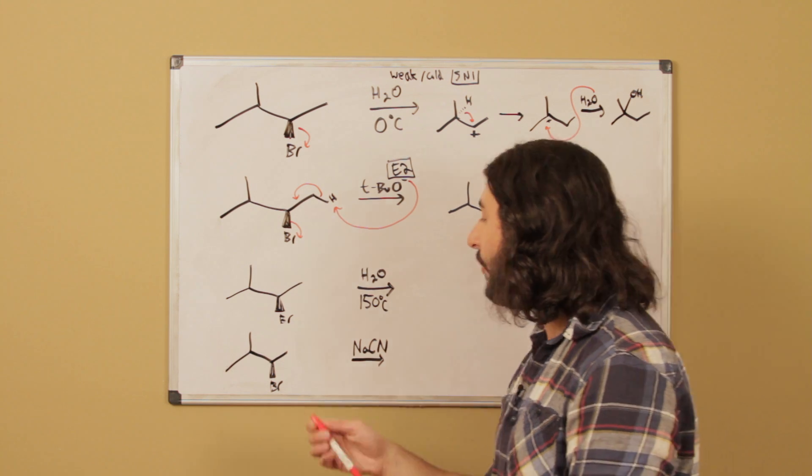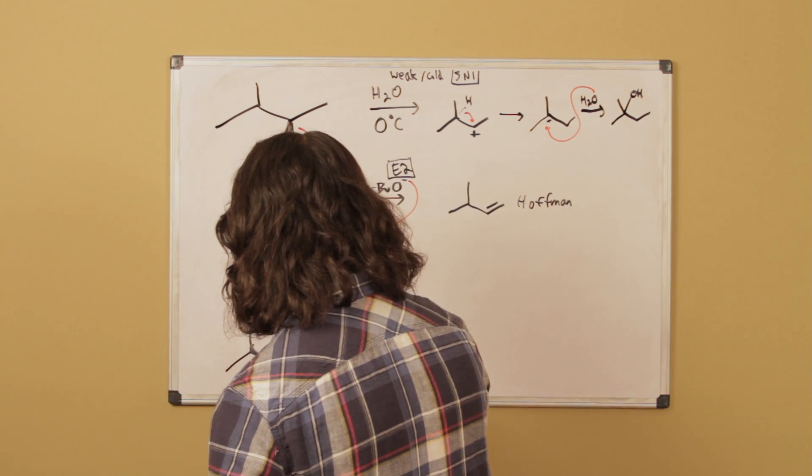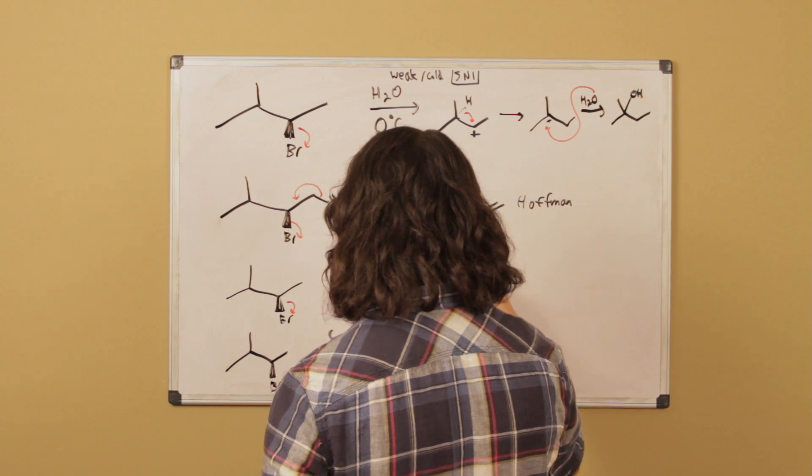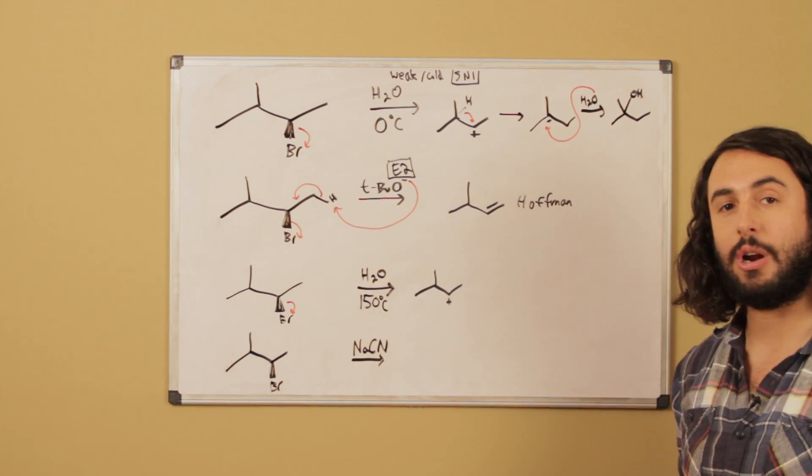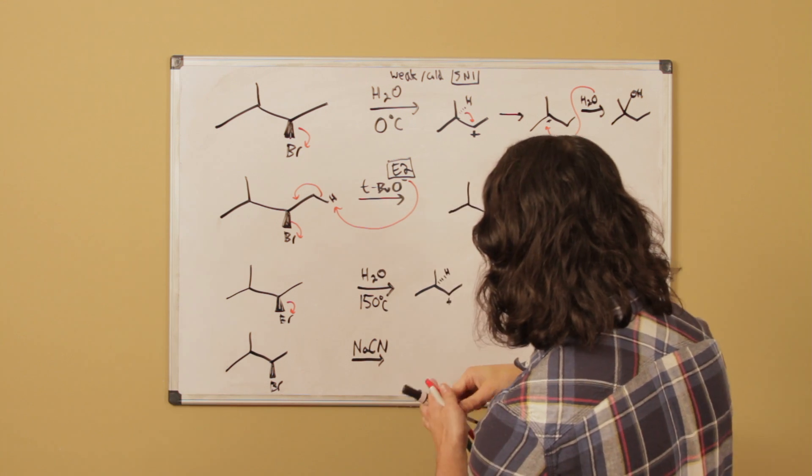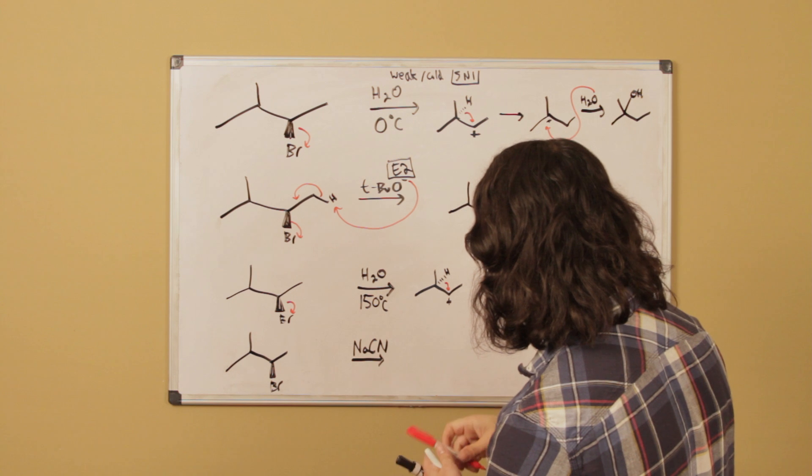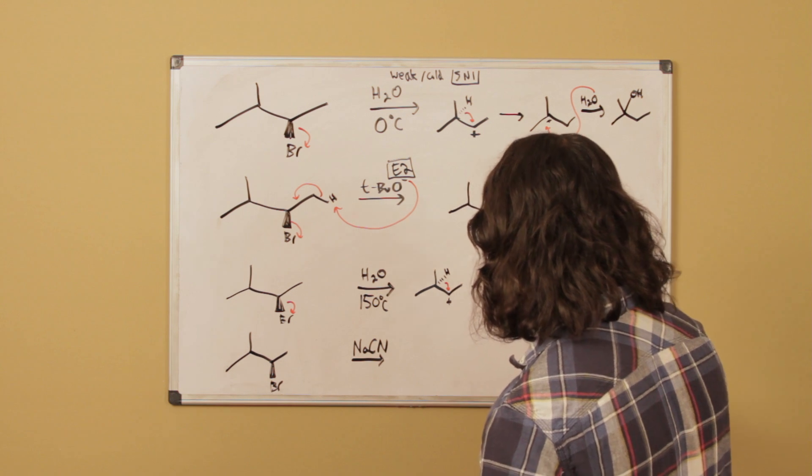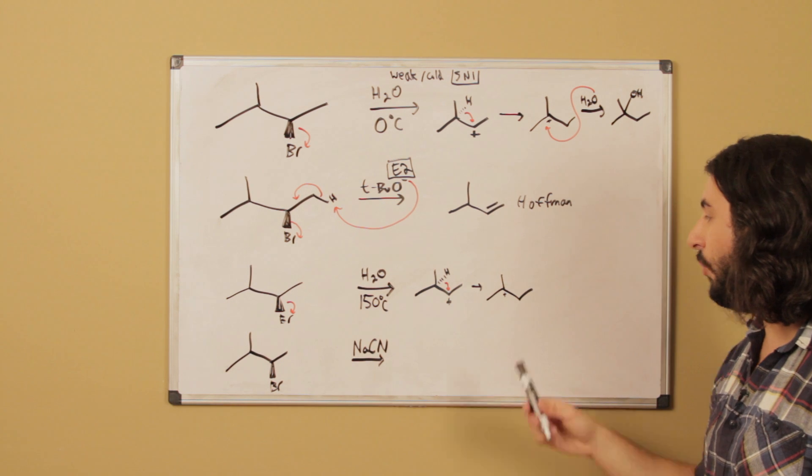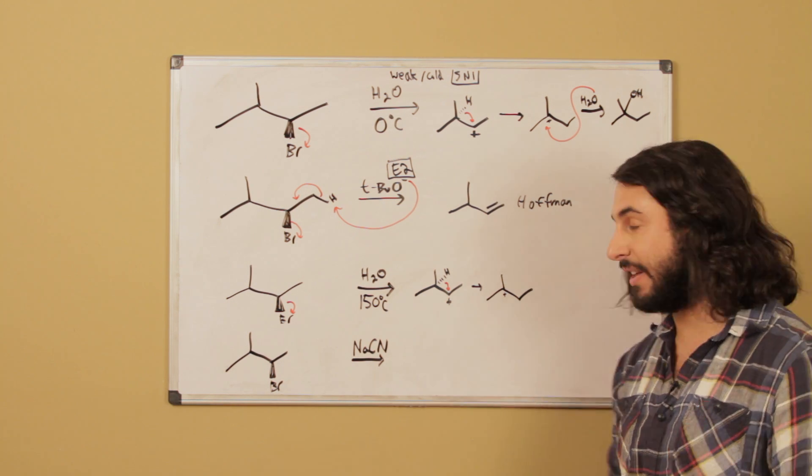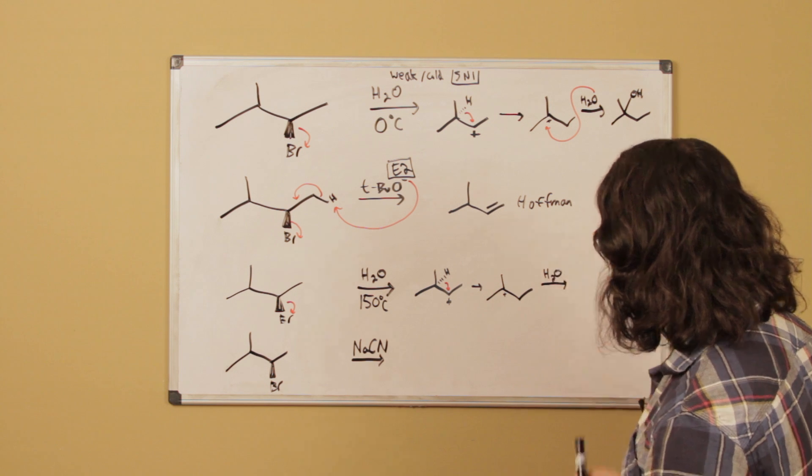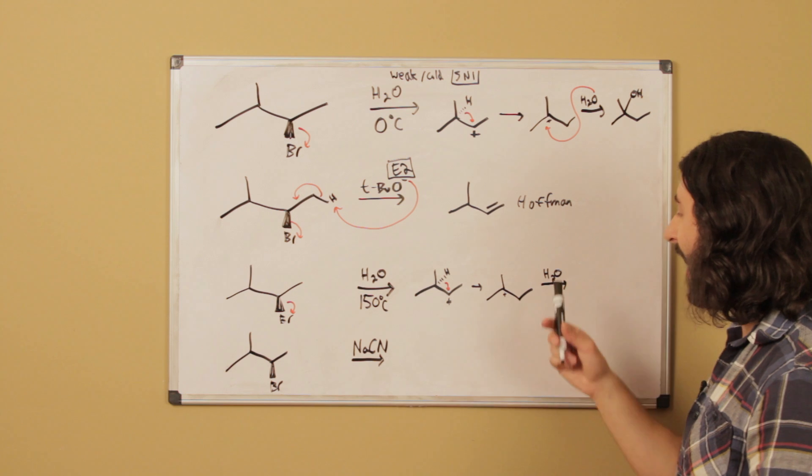So once again E1 means we're going to first go ahead and have the leaving group leave. So there's our carbocation. Once again probably this hydride shift is going to occur, right? And so here we have that. And then we said that E1 is going to occur once again because of the temperature. And so water is going to get to go ahead and choose a proton to extract.